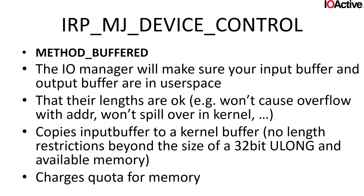The transfer type has four kinds: METHOD_BUFFERED, METHOD_NEITHER, METHOD_IN_DIRECT, and METHOD_OUT_DIRECT. METHOD_BUFFERED is the preferred, safer way of passing IoCtls to drivers. The IO manager mirrors user data into a kernel buffer of the same size, copies the data over, and passes that to the driver. This means the driver doesn't need to worry about race conditions or whether addresses are in user land vs. kernel. The IO manager also charges memory quota, so if you hit your quota limit, the call fails gracefully.